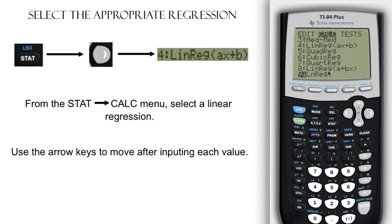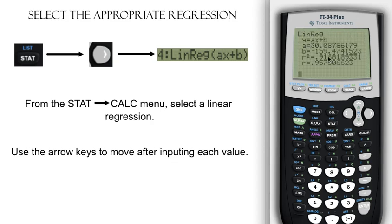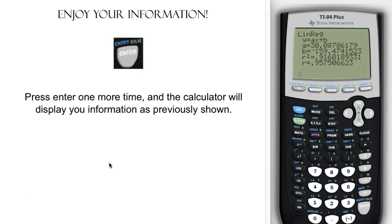Right now, all we're doing is a linear regression of the form AX plus B. So just pick number four and you can either type the number four or hit enter. And it brings up this screen and you'll have to hit enter one more time after this. And there you go. Now you have all of your data. Now one thing I cannot stress enough is that after you have this data, record it, write it down somewhere, pencil and paper, where it cannot go away.